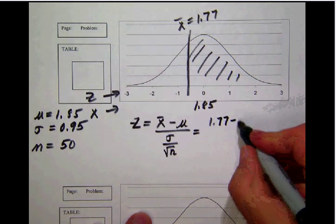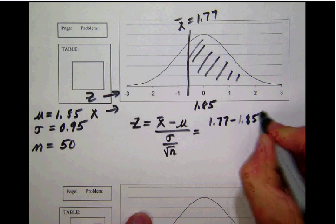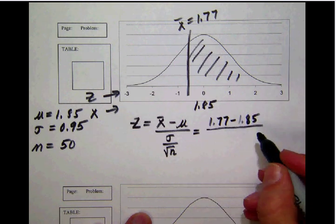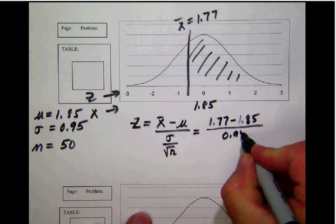Minus μ, which is 1.85, we're going to divide that by σ, which is 0.95, but in turn we're going to divide that by the square root of 50. So we're going to have this stacked fraction, and that takes a little bit of finesse.